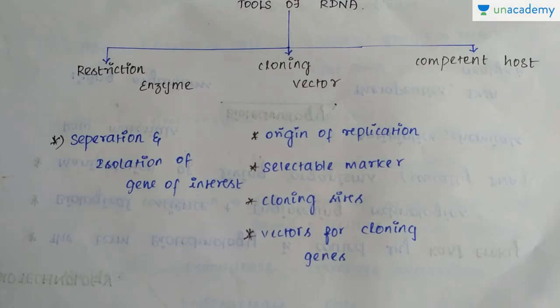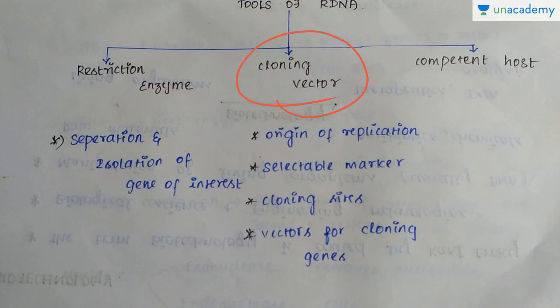Hi guys, this is Vastakir from Aynacademy. Today we are going to discuss the tools that are employed in recombinant DNA technology. The tools are restriction endonucleases, DNA ligase, cloning vectors, DNA polymerase, and the host organism. Out of these, we are going to describe only the restriction enzyme, cloning vector, and the host organism.